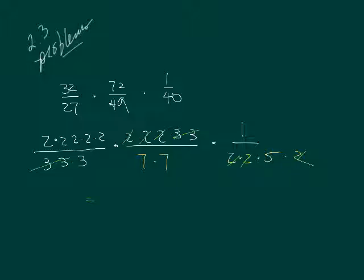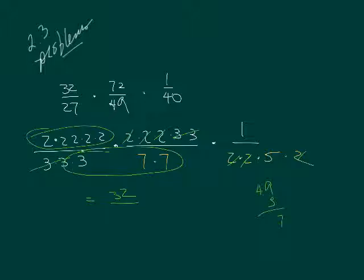Is there anything else there that I can cancel? It doesn't look like it. So I've got 32 over 7 times 7 is 49, and then 49 times 3. So 32 over 147 looks like that's as small as we can go.